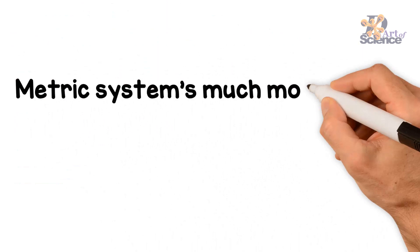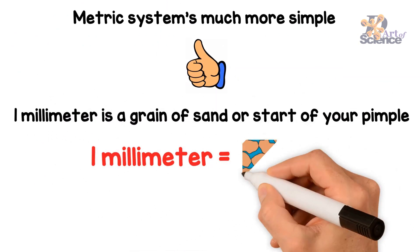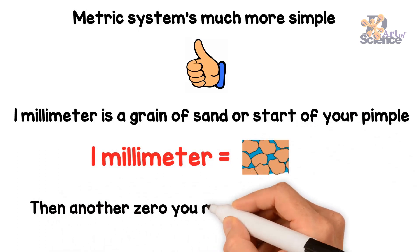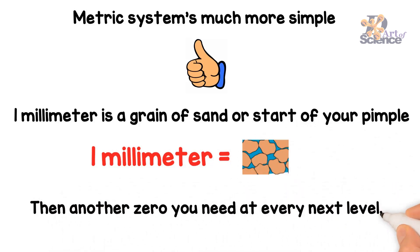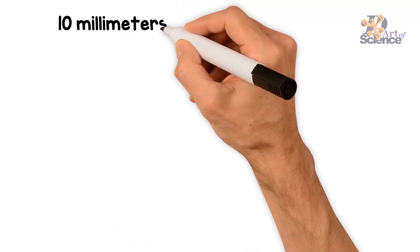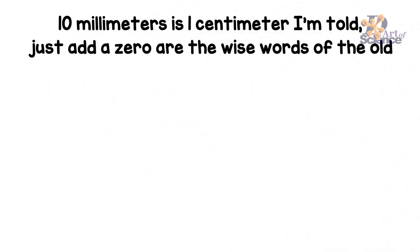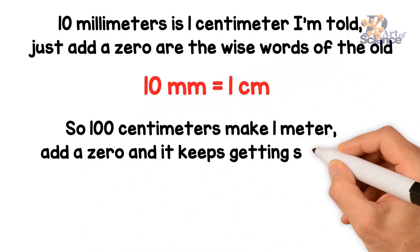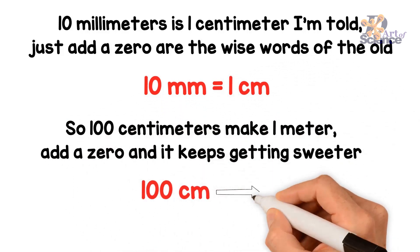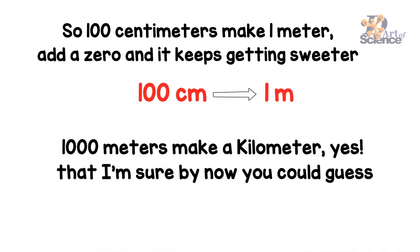Metric systems much more simple. One millimeter is a grain of sand, start of your pimple. Then another zero you need at every next level. Saves you the confusion of the imperial level. Ten millimeters is one centimeter. Just add a zero, all the wise words of the old. So one hundred centimeters make a one meter. And it keeps getting sweeter. One thousand meters make a kilometer.